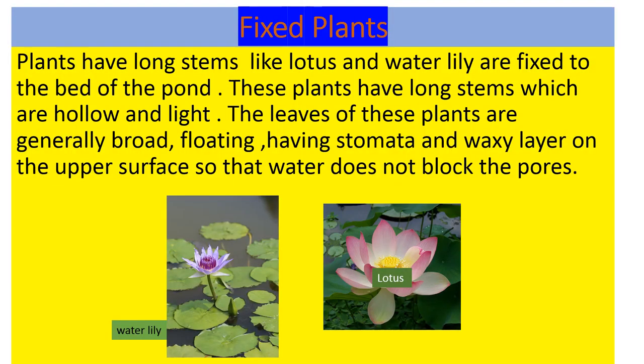Next are fixed plants. Plants like lotus and water lily have long stems and are fixed to the bed of the pond. Water lily and lotus are fixed aquatic plants.